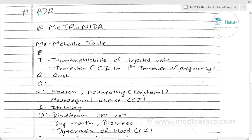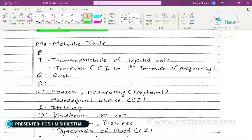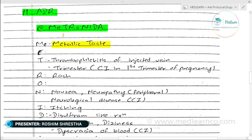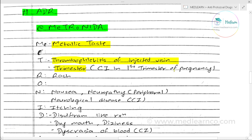Now let's look at the ADR — adverse drug reactions — of metronidazole using the mnemonic METRONIDAZOLE. M stands for metallic taste. E stands for thrombophlebitis of the injected vein. T stands for first trimester of pregnancy, which is contraindicated.